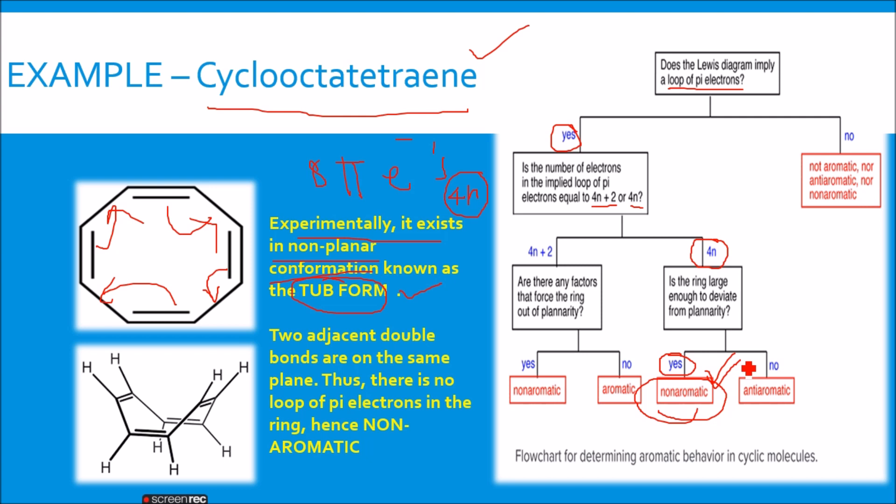For aromaticity, the condition is the molecule should be cyclic, planar and must obey 4n plus 2 pi electron rule. Here you can see that it obeyed cyclic and you saw it is having a 4n system. Then it should fall under anti-aromatic. It should have fallen in anti-aromatic. But,